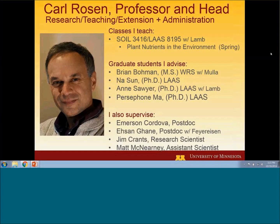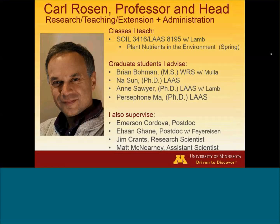My name is Carl Rosen. I'm professor and head in the Department of Soil, Water and Climate. I have a three-way split: teaching, research, and extension. However, since I'm an administrator, the actual percentages don't really mean anything. I teach Soil 3416, Plant Nutrients in the Environment, in the spring, co-taught with John Lamb. We also offer the same class to graduate students without a soils background as SD195, so those who need that information can take it for graduate credit.